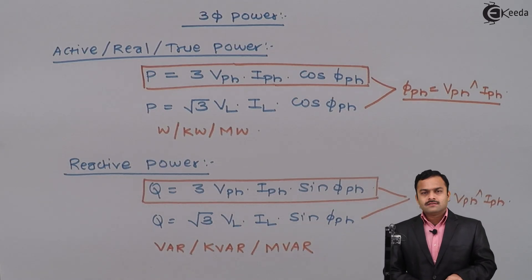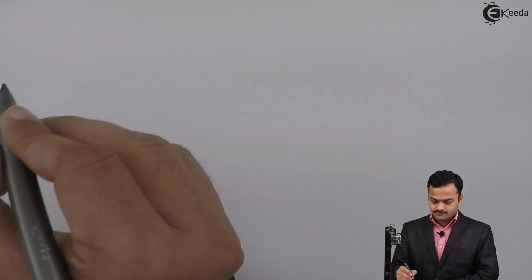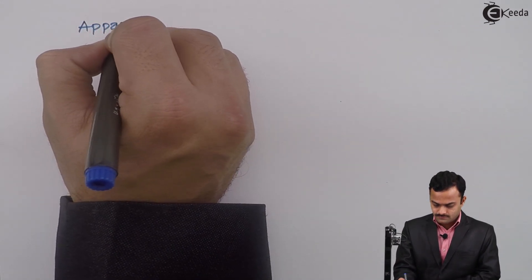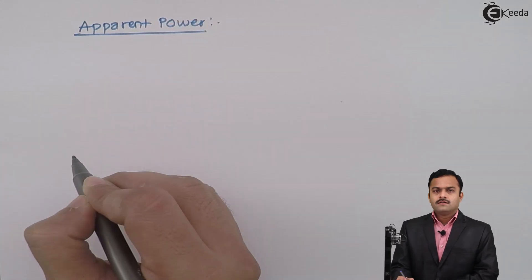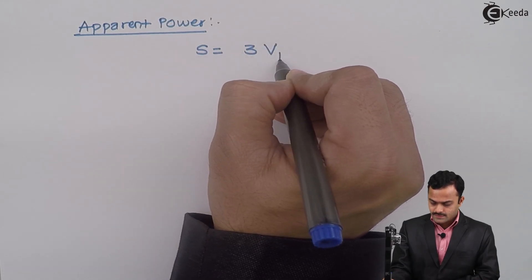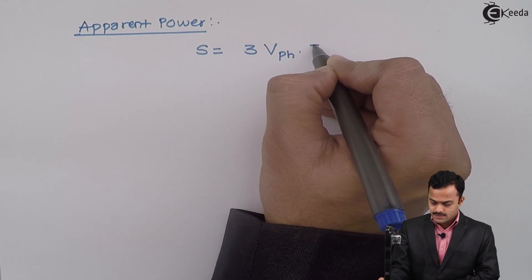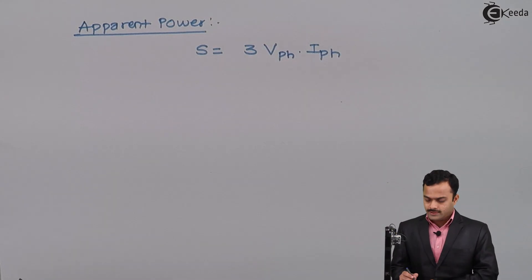Let's go to third type of power that is apparent power. It is given by S equal to 3 times VPH into IPH. In terms of line quantities,